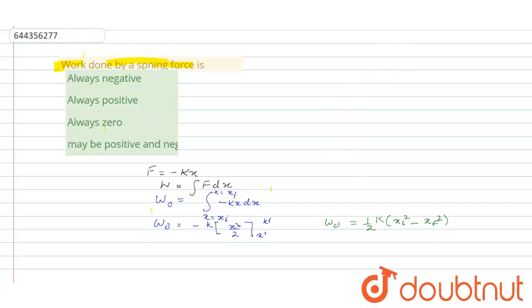So under this condition, what we find is that when xi is greater than xf, we find the work done will be greater than 0. And when xi is less than xf, we find the value of W naught will be less than 0. So we are finding it will be either positive or negative.